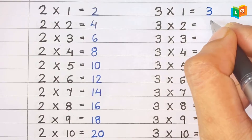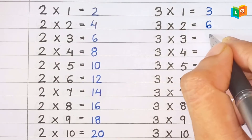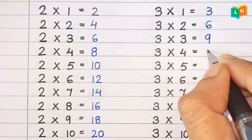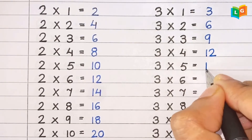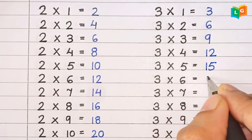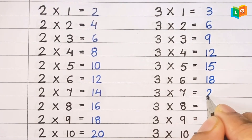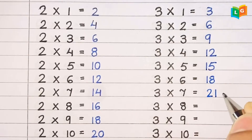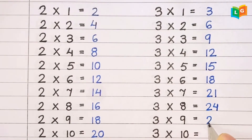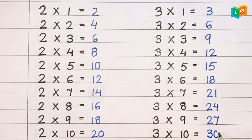Now let's see table of 3. 3 1s are 3, 3 2s are 6, 3 3s are 9, 3 4s are 12, 3 5s are 15, 3 6s are 18, 3 7s are 21, 3 8s are 24, 3 9s are 27 and 3 10s are 30.